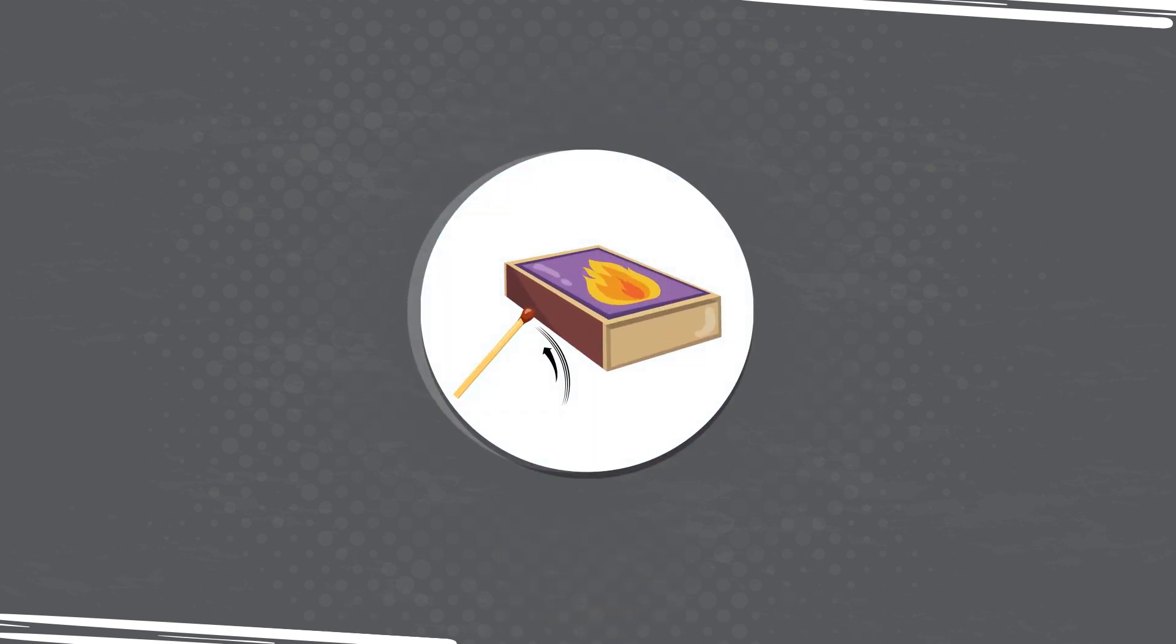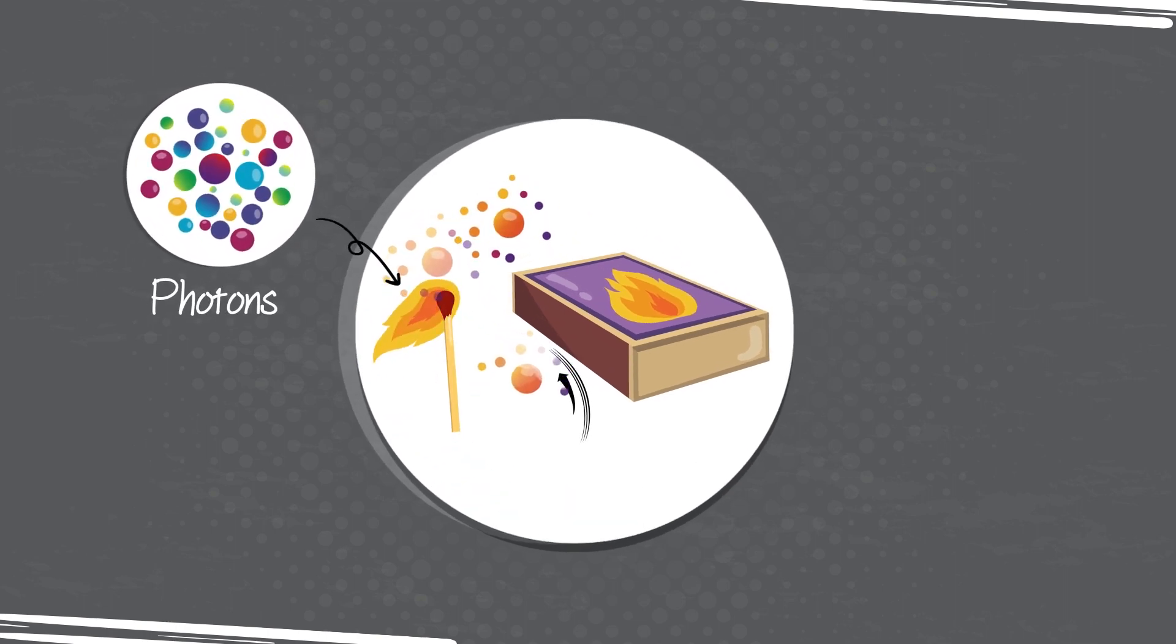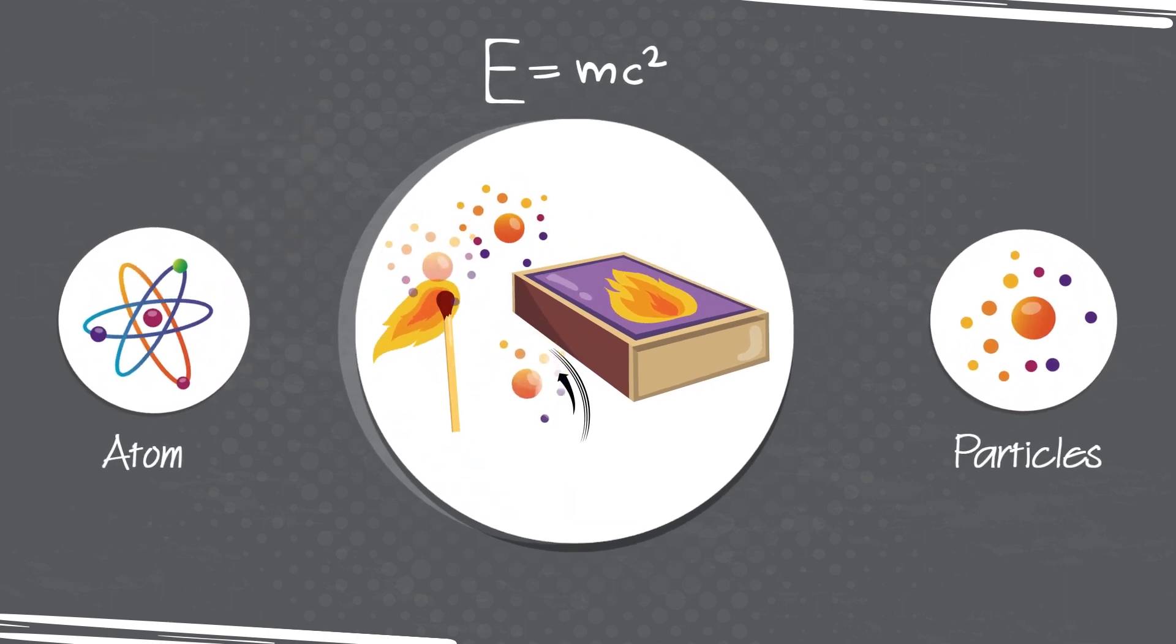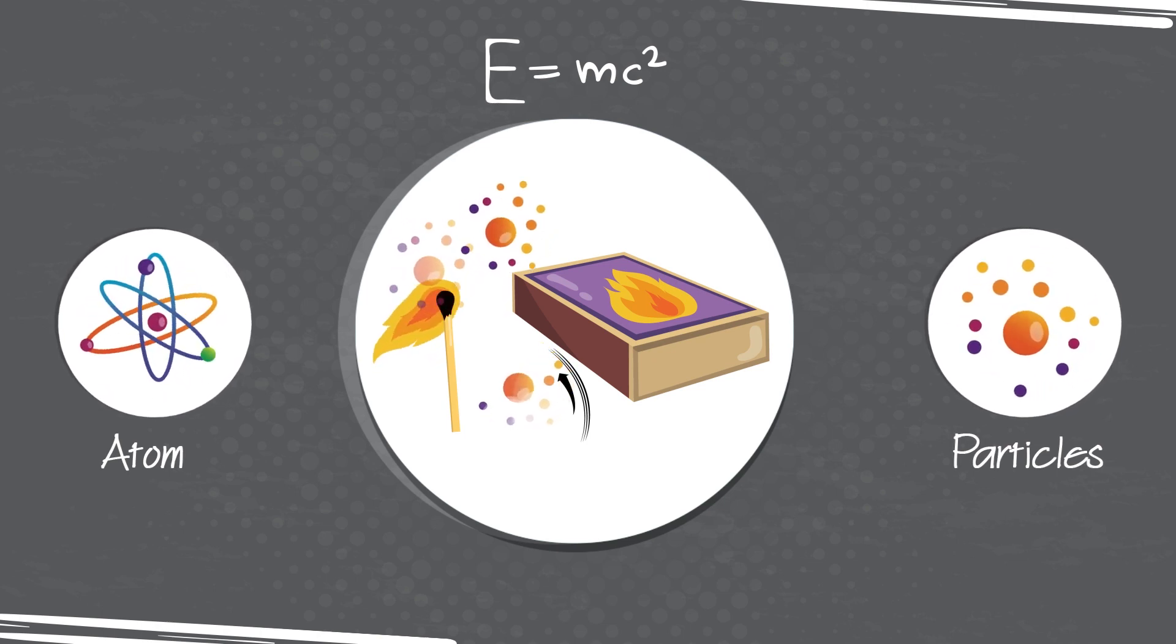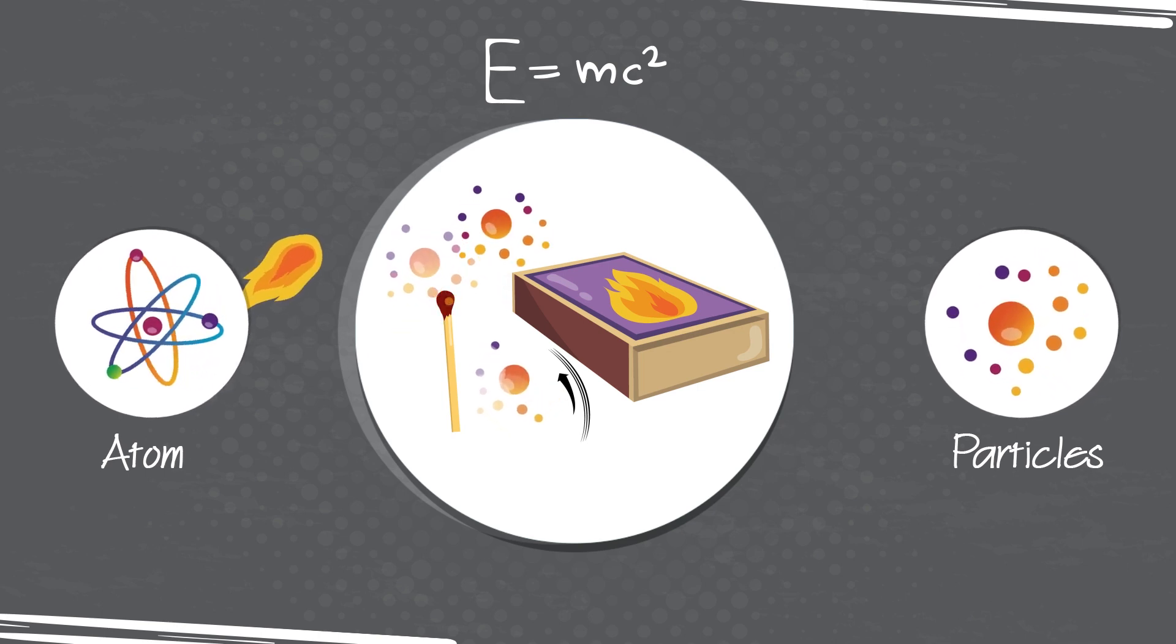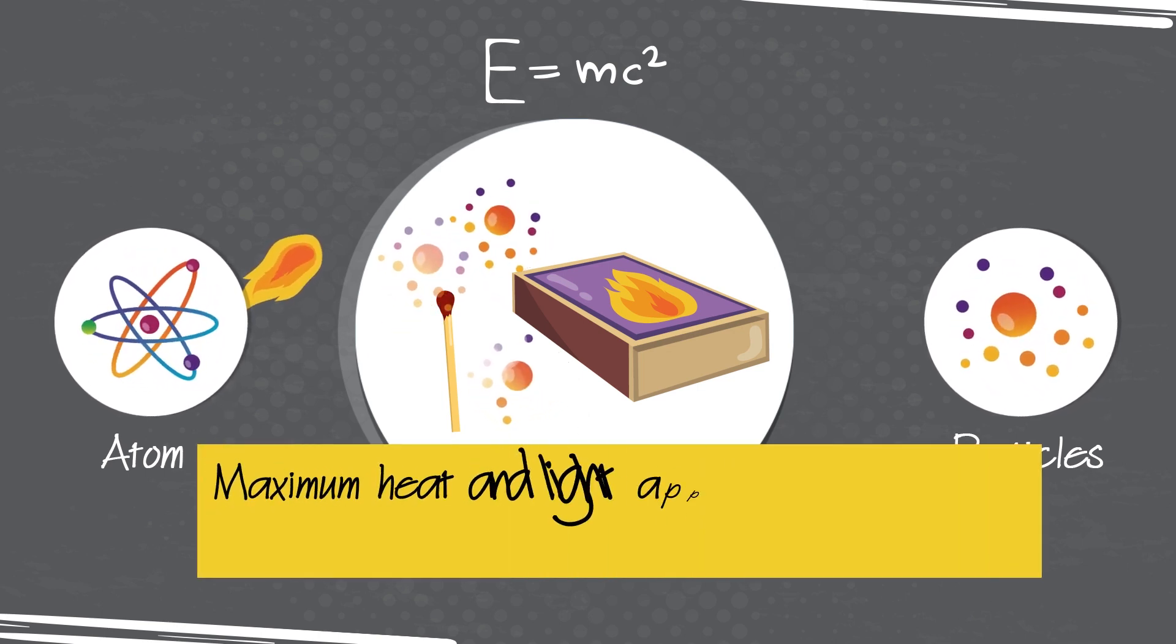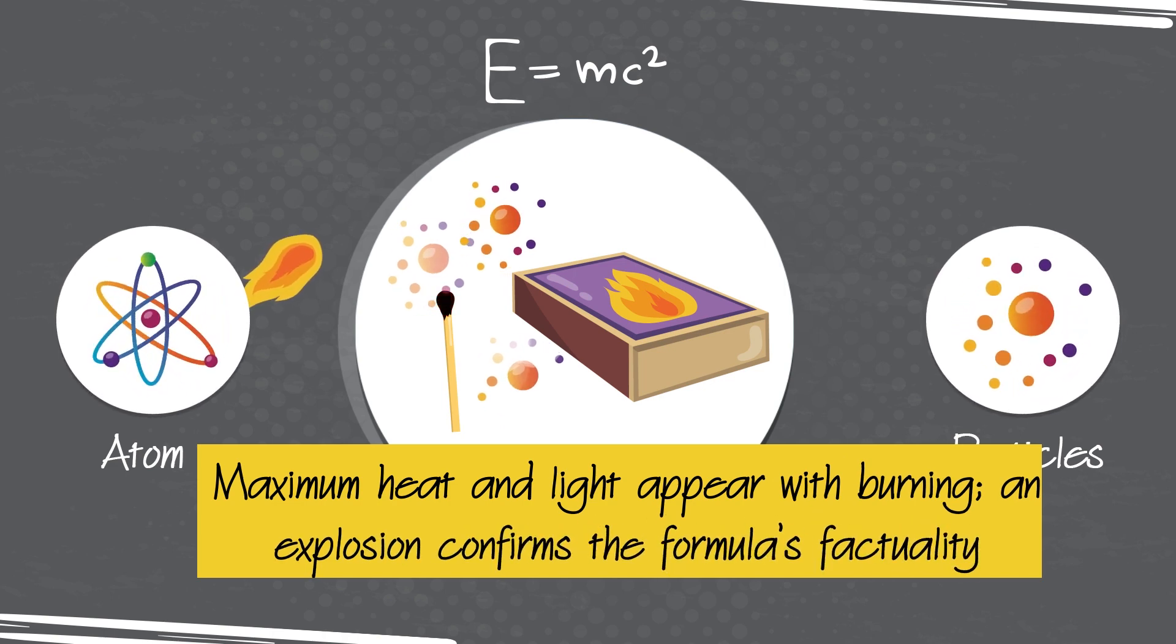The first speed, normal, is similar to the speed of striking a match. The second speed is quite different. According to E equals mc-squared, during the process, atoms, particles, etc., must reach the maximum velocity allowed in the universe, light speed. Maximum heat and light appear with burning. An explosion confirms the formula's factuality.